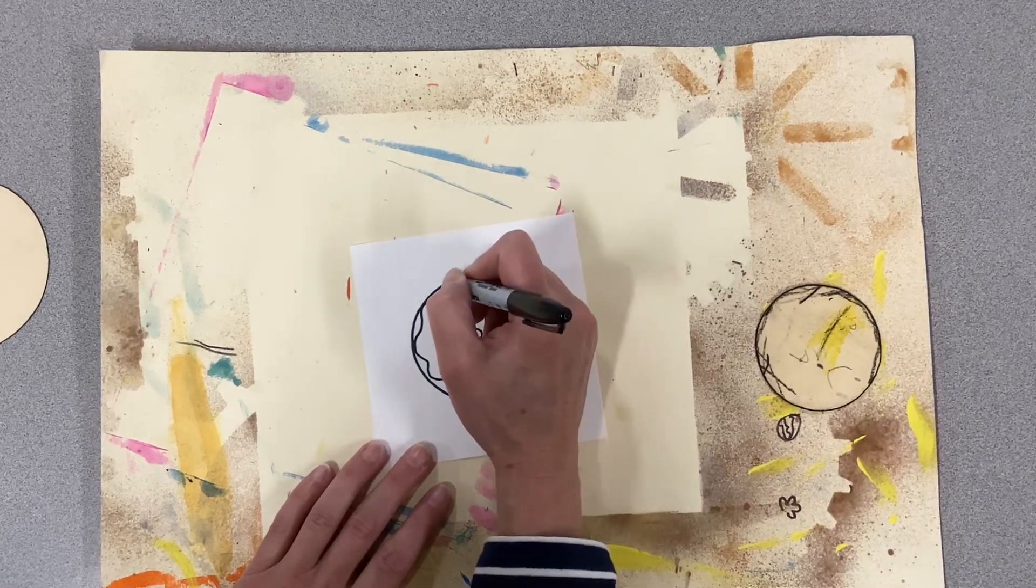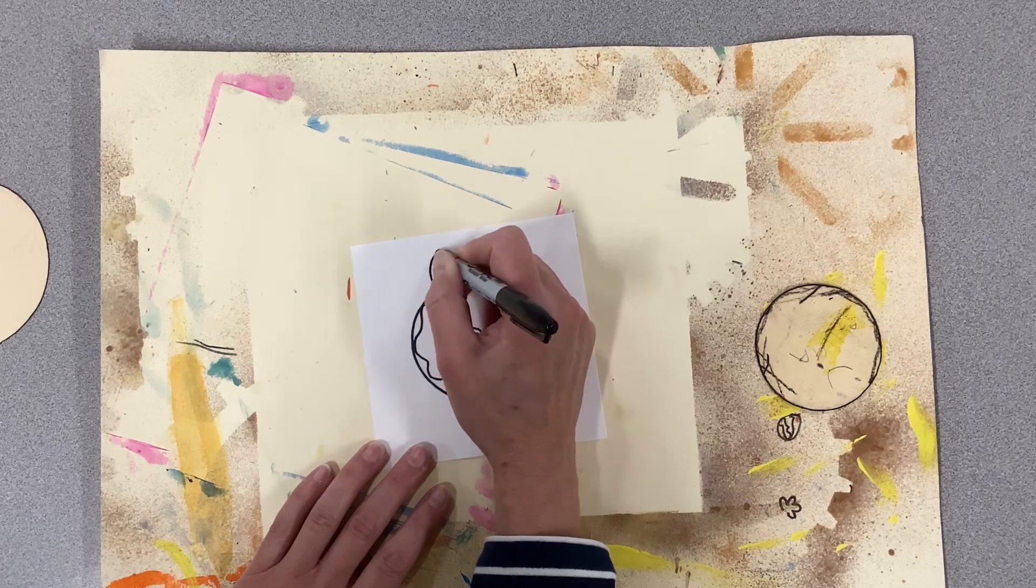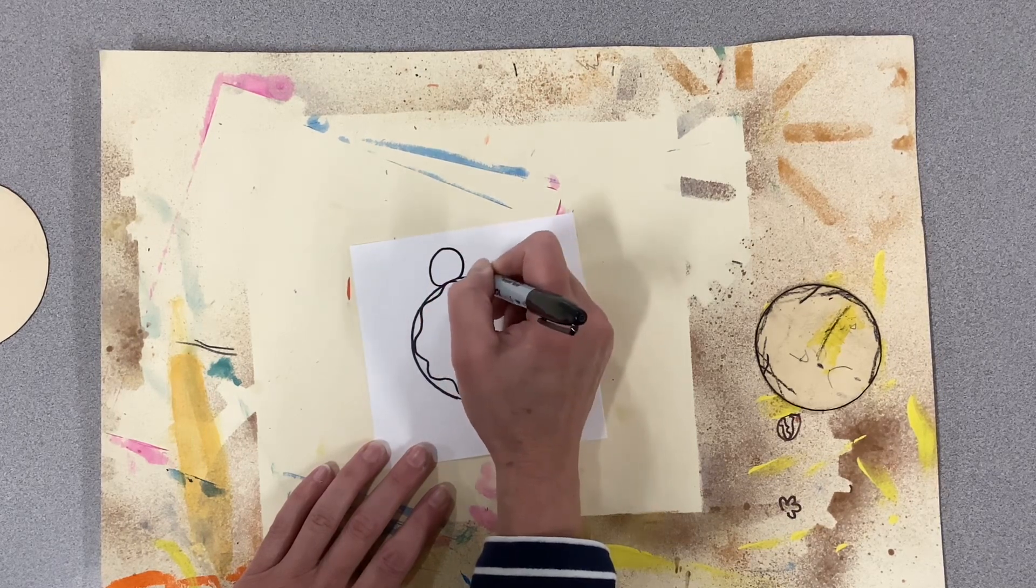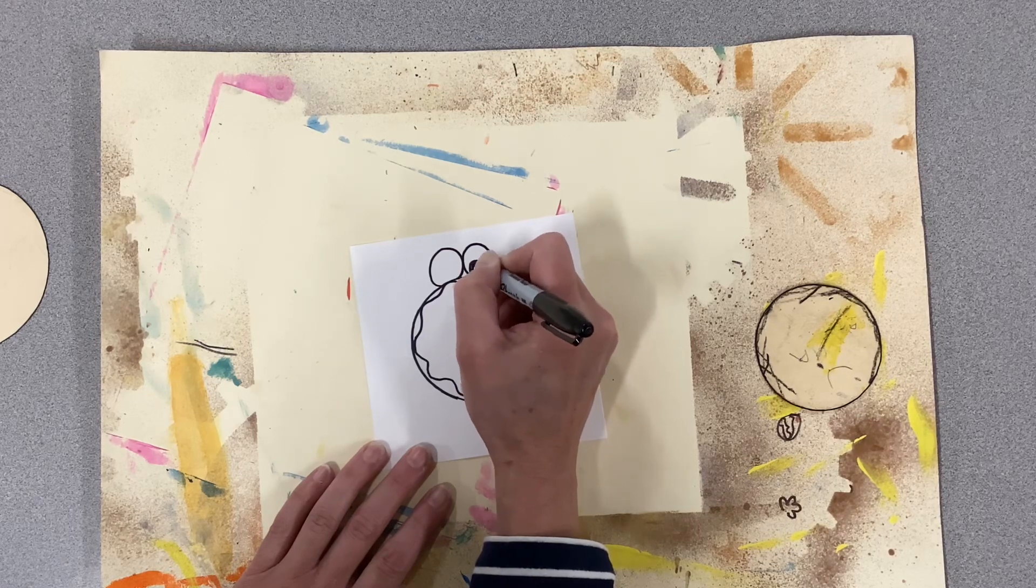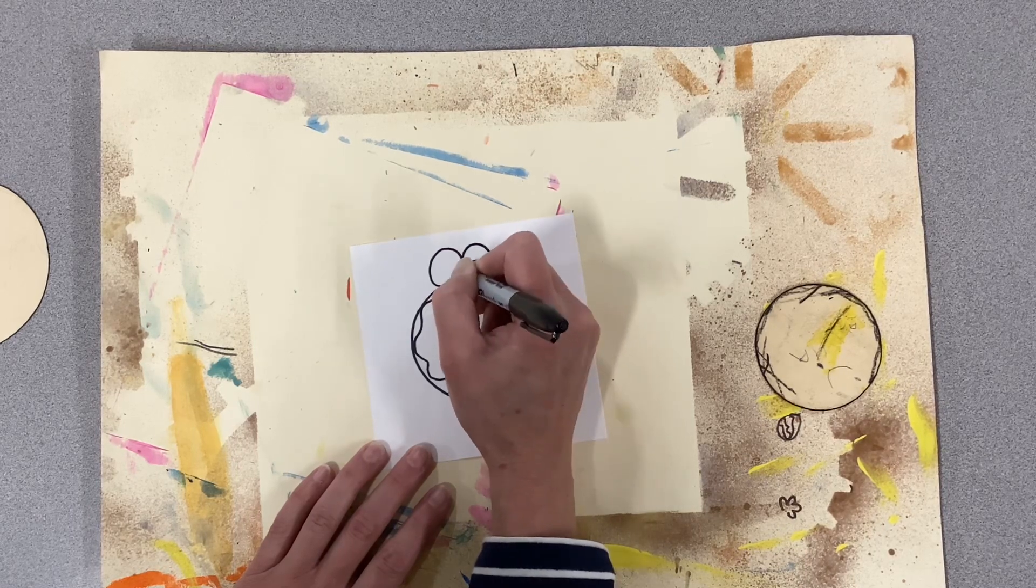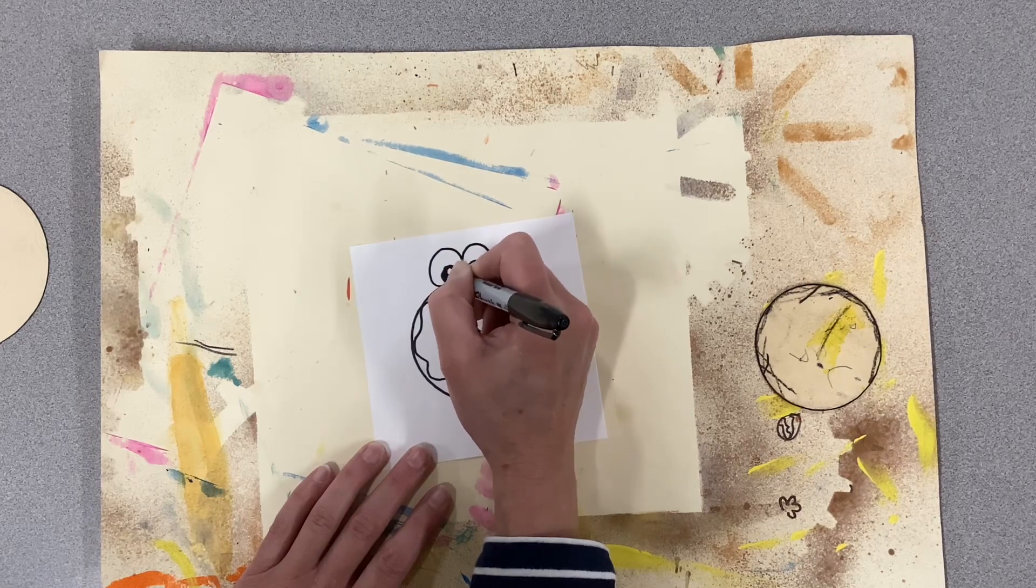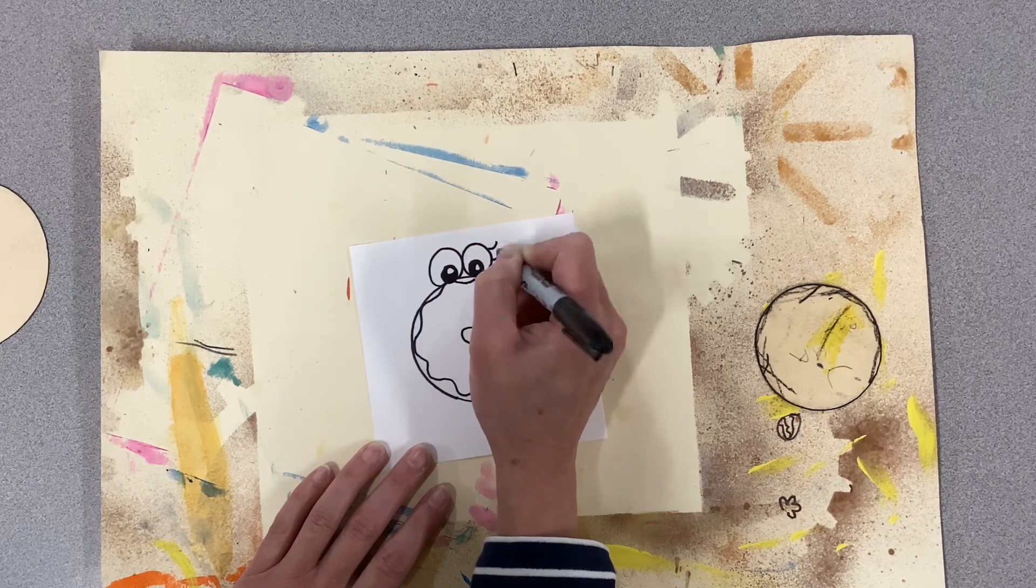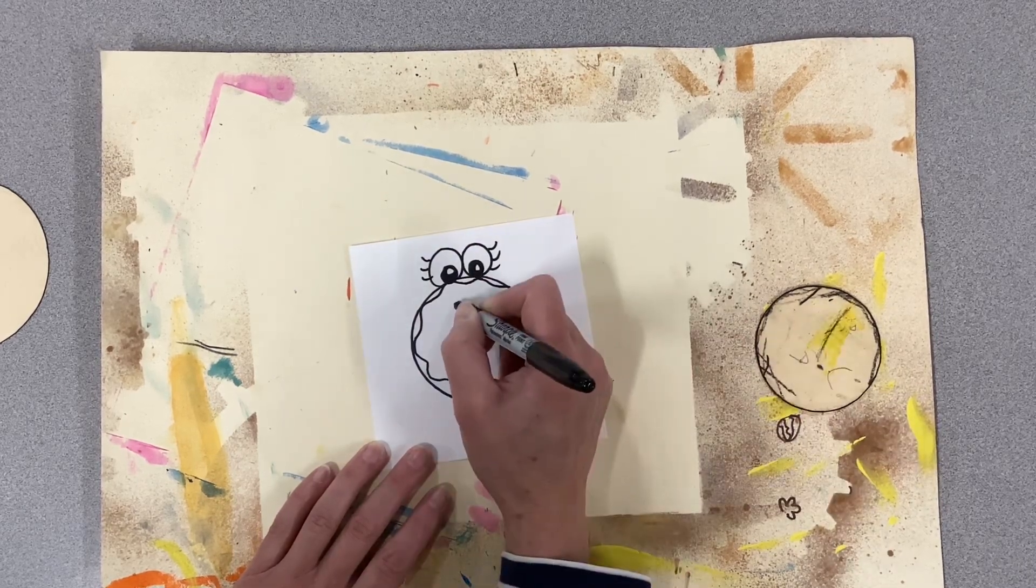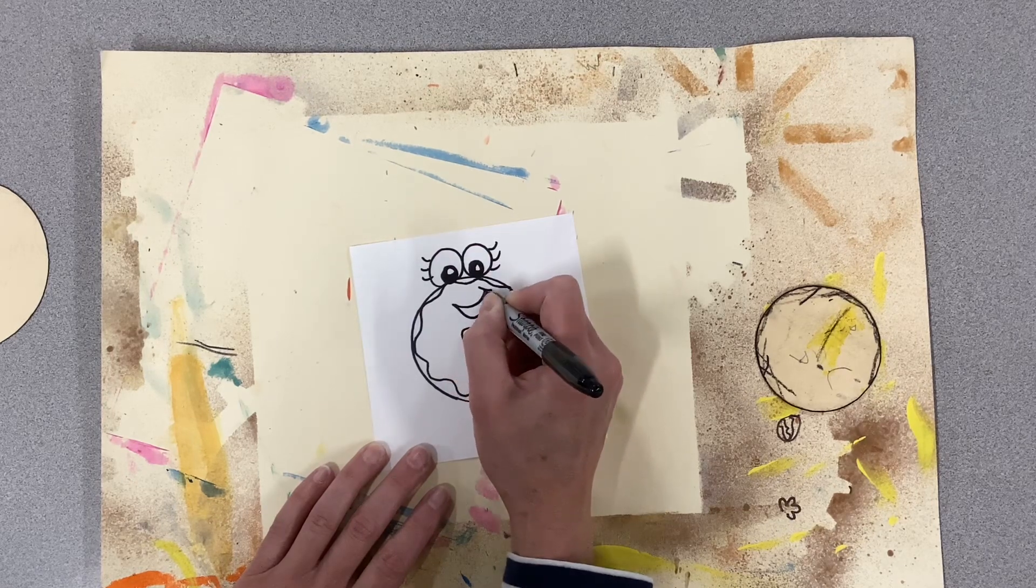Now I'm going to turn it into my kindness creature. Think about different kinds of shapes for the eyes. Do you have eyebrows, eyelashes, a mouth?